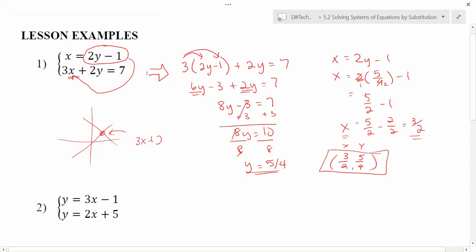So if I have 3x plus 2y equals 7, if I use x as 3 halves and y as 5 fourths, let's see if we get 7. This gives me 9 halves. We can reduce a little bit, we get 9 halves plus 5 halves. 9 plus 5 is 14. 14 halves is, in fact, 7. So this ordered pair works in the second equation, and we know it works in the first equation as well.